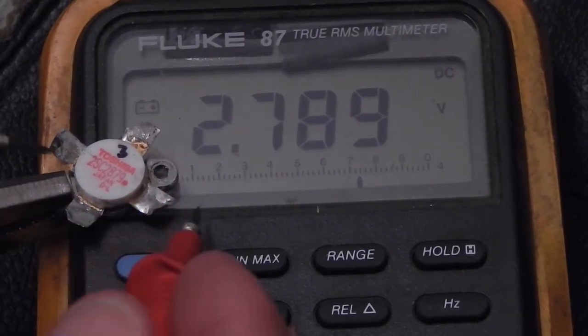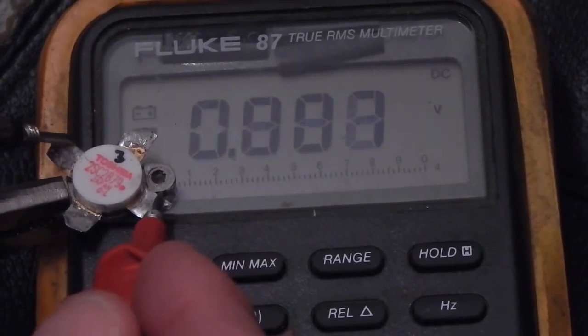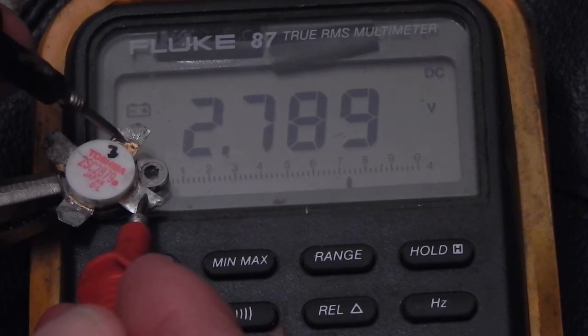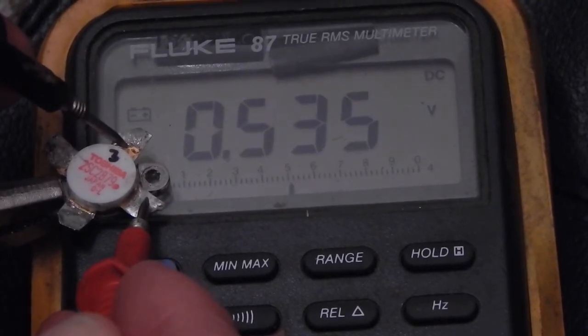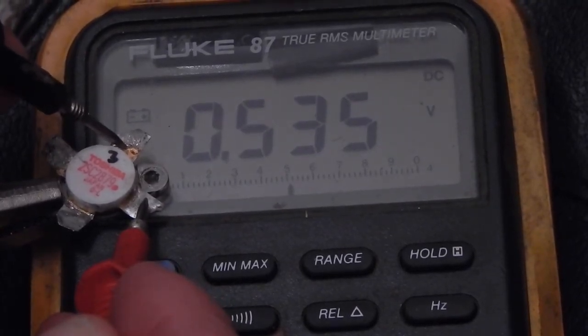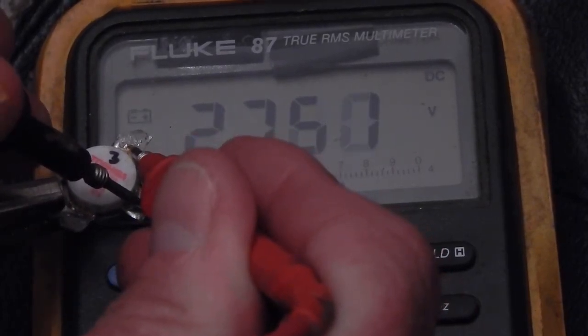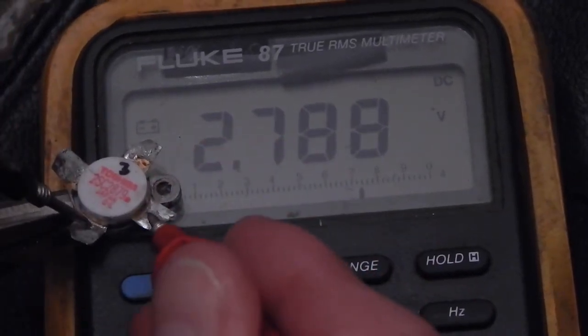Transistor number three. Emitter to emitter, shorted like it should be. Collector to emitter, 0.535. Reverse, open like it should be. Base to emitter, 0.566.